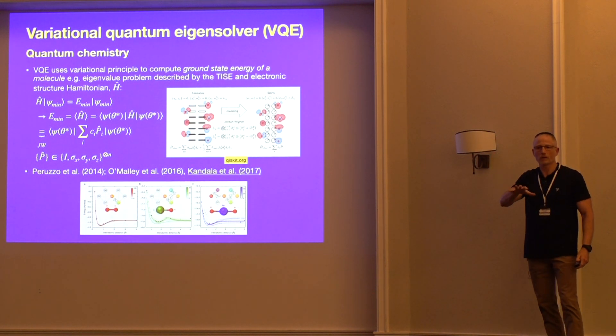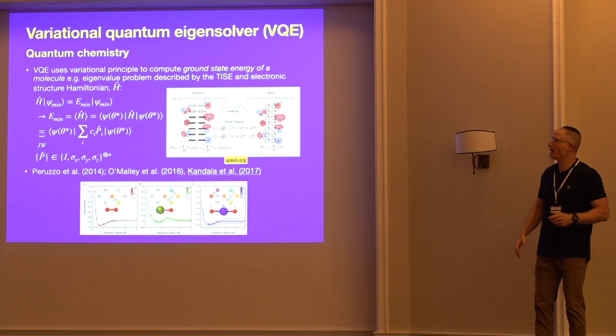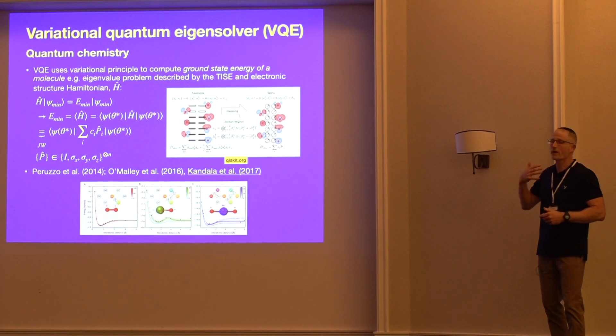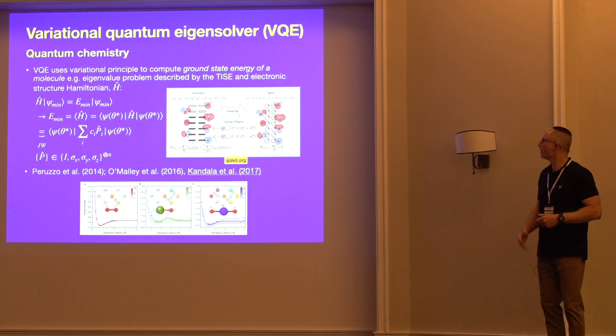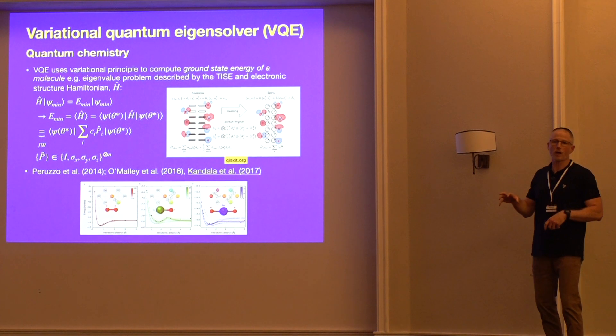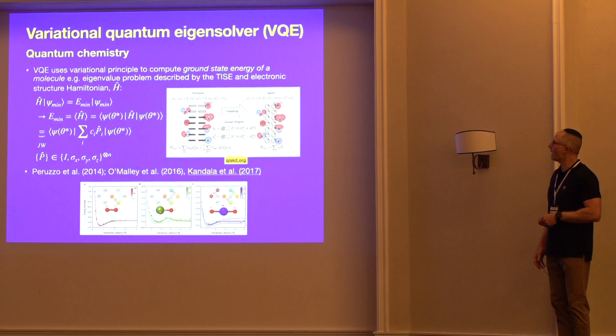We're going to apply this idea, and I'll get into more details of how we do it in just a minute, to VQE, which was the original VQA, and the application is to quantum chemistry. VQE, if you know anything about this, it uses a variational principle, that's where the name comes from, to compute the ground state energy of a molecule. It basically solves an eigenvalue problem defined by the time-independent Schrödinger equation based on the so-called electronic structure Hamiltonian, denoted here H hat.